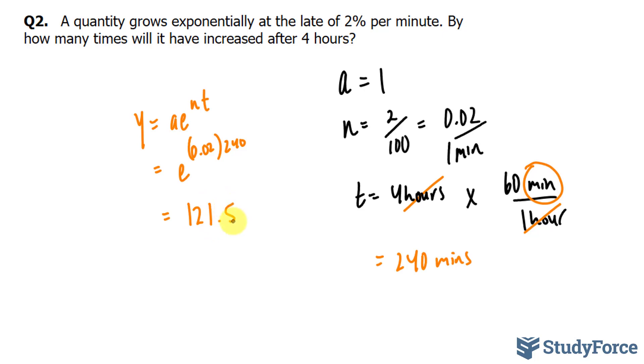If the quantity grows exponentially at a continuous rate of 2% per minute, it will have increased by a factor of 121.5 from the original A.